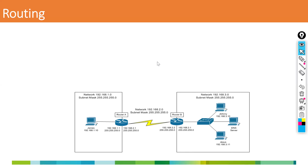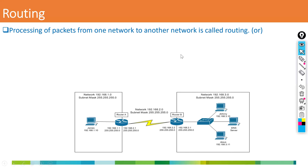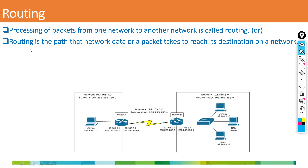Now we are discussing about routing. Routing is a process of sending or carrying the packet from one network to another network — that is called routing. There is another definition: routing is the path that network data or a packet takes to reach its destination on the network.